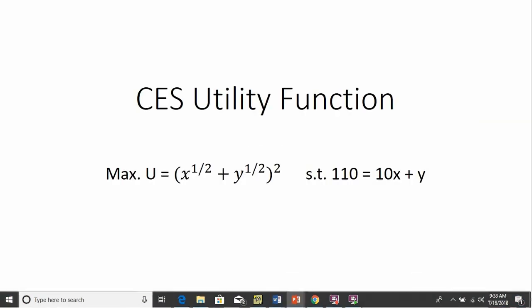Hello. In this video, we're going to look at a CES utility function, constant elasticity of substitution utility function. So here's our utility function, and we are going to maximize this subject to a budget constraint where a consumer has $110 of income, the price of good X is $10, and the price of good Y is $1.